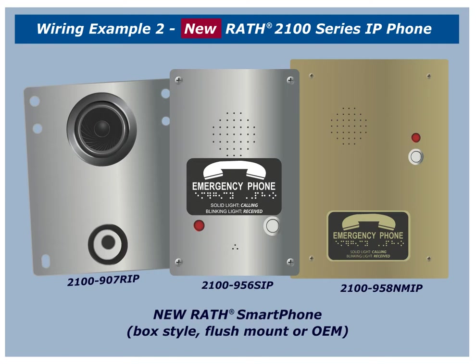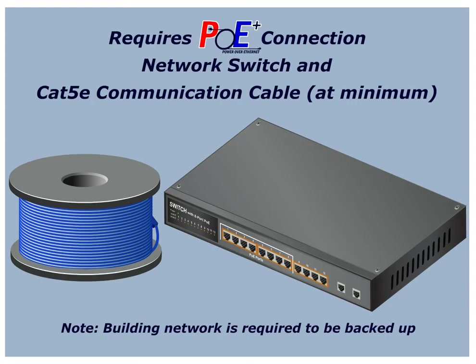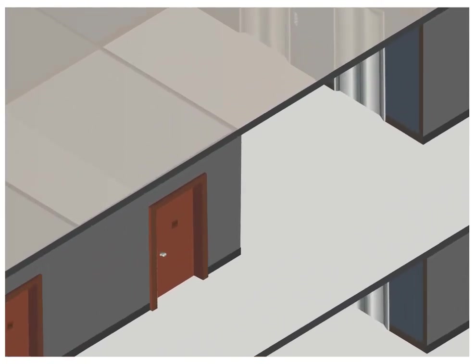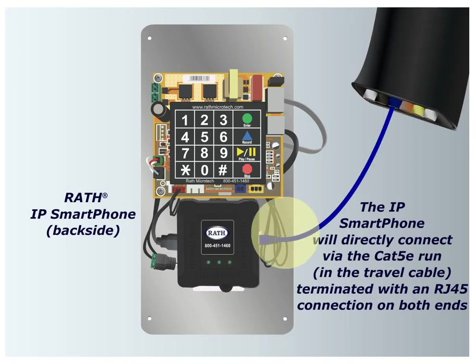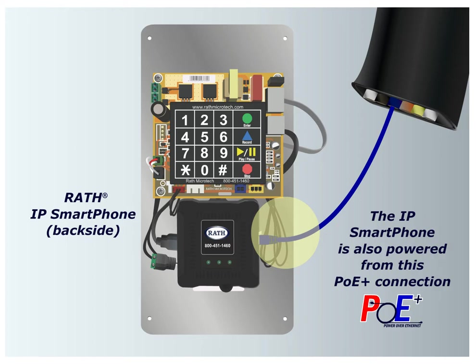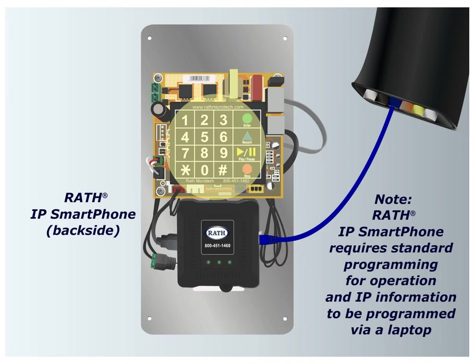Wiring Example Number 2: New Rath 2100-Series IP Phone. We will demonstrate the wiring when a new 2100-Series IP phone is installed in the elevator. This setup requires a connection to a PoE Plus network switch and a minimum CAT 5E network cable into the elevator. Here is an example of an in-car 2100-Series IP phone. Step 1: the IP phone will directly connect via the CAT 5E run in the travel cable, terminated with an RJ45 connection on both ends. The IP phone is also powered from this PoE Plus connection. The phone requires standard programming for operation and IP information programmed via laptop.